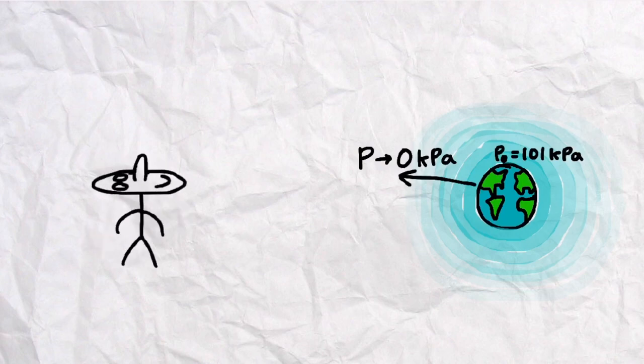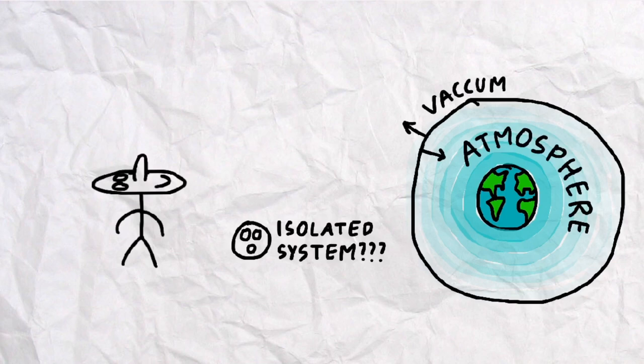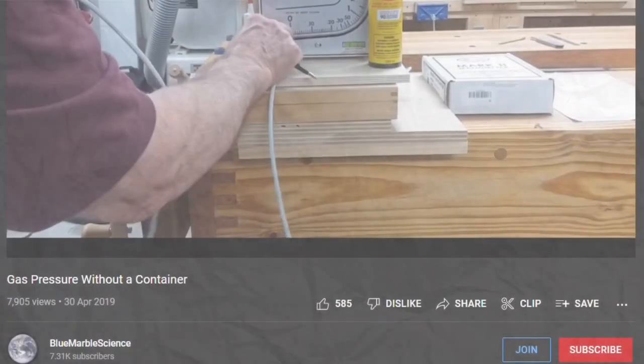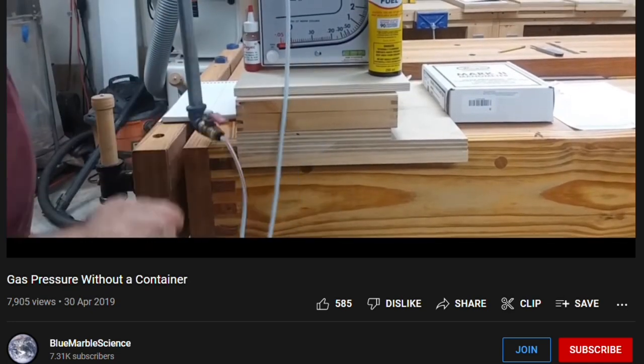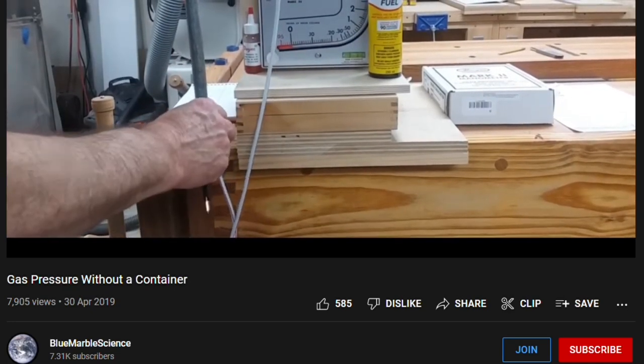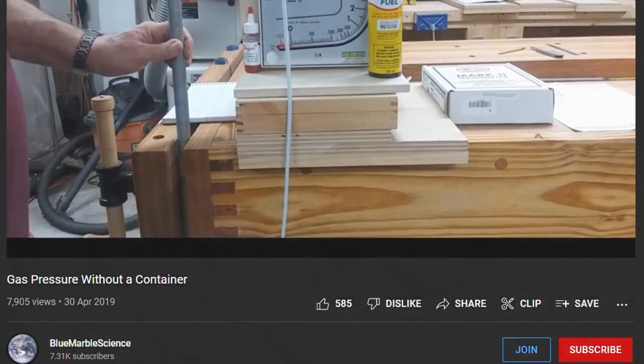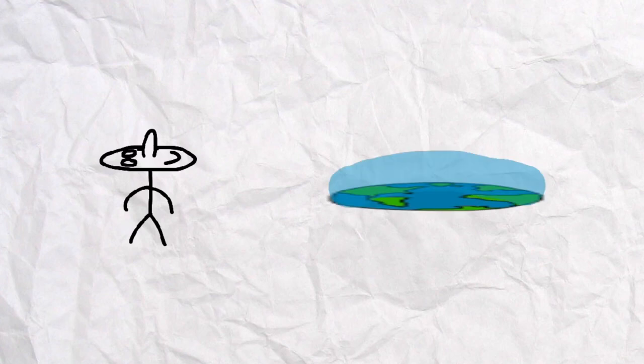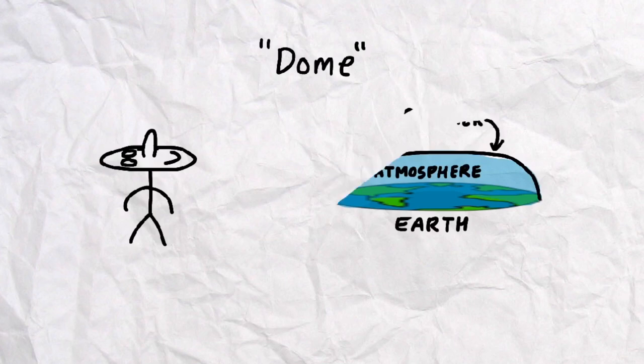If this isn't convincing and flat earthers still believe in two different pressure systems, people have literally shown experimentally that gas pressure is in fact still possible without a container. Credits to Kyle Wilson, who has found a video of someone demonstrating this. But even if the flat earthers were right about this claim disproving a globe Earth, it would mean that a dome or a barrier above the atmosphere is necessary for the flat earth model.